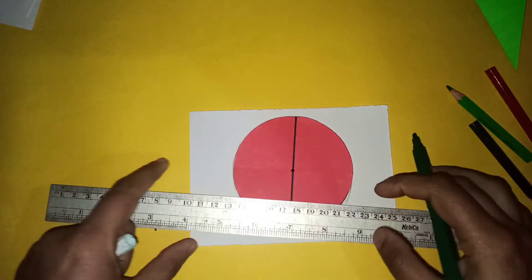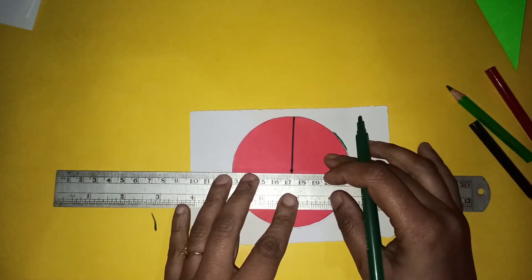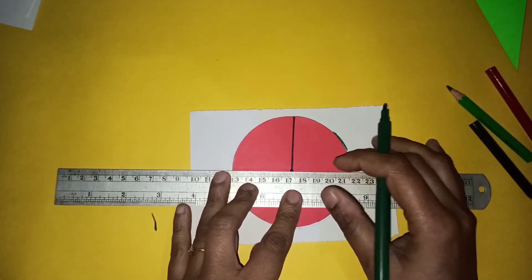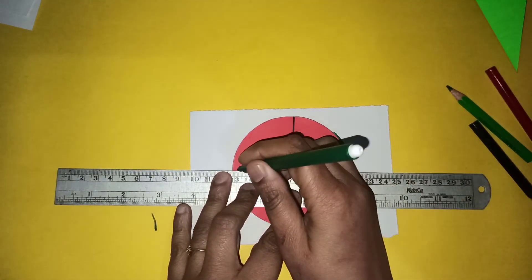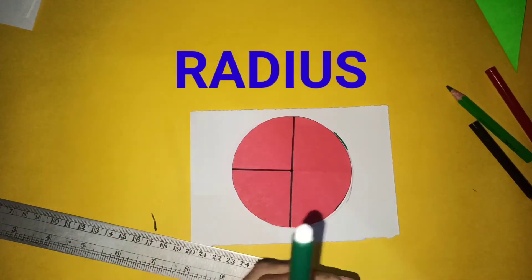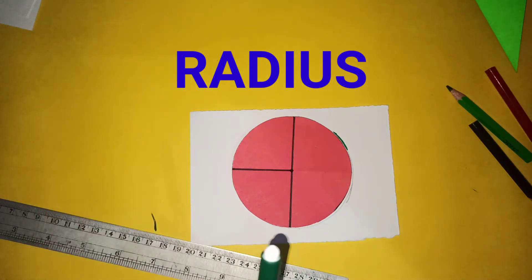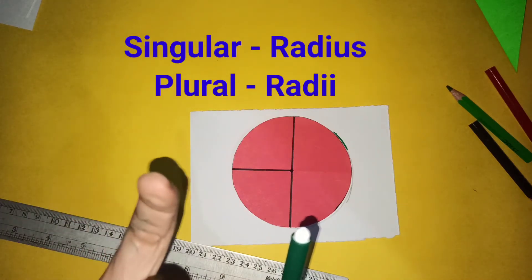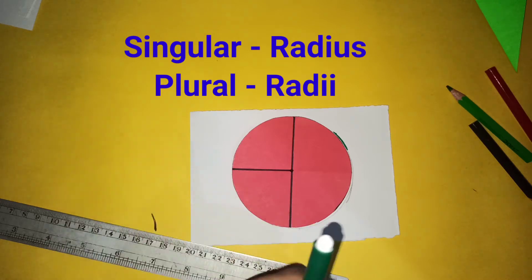If I draw a line half of the diameter, that means I start from the center and go till the circumference. This line also has a special name. It is called the radius of the circle, and like diameter, infinite radii are possible. Now just concentrate on the word radius and radii. Radii is the plural of radius. So infinite radii are possible.